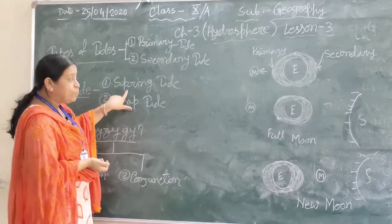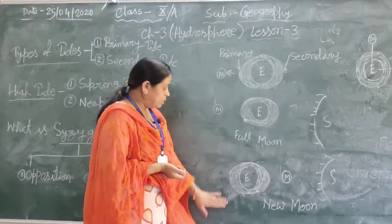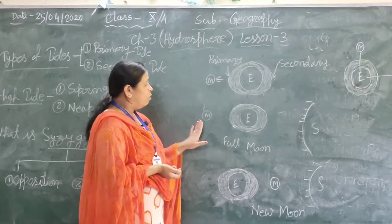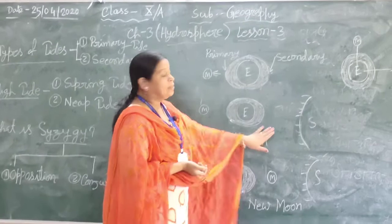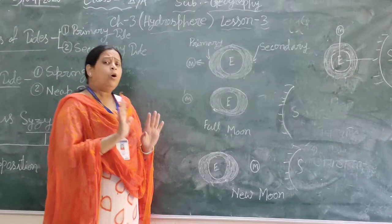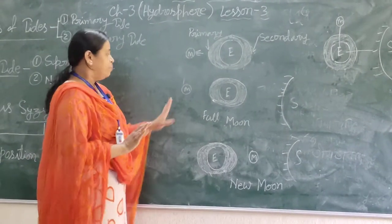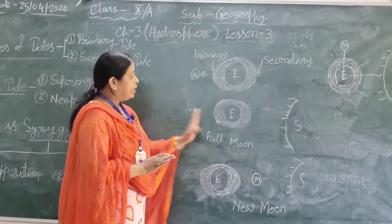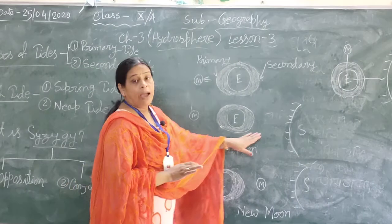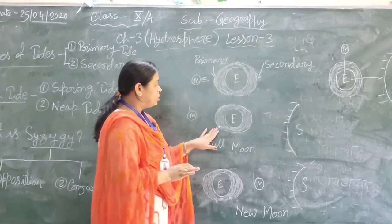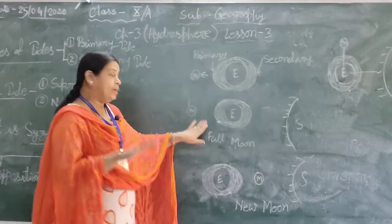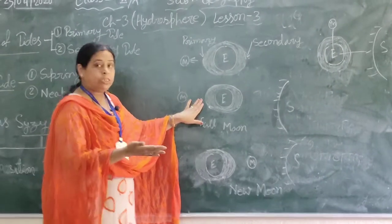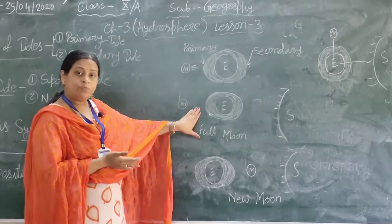What is spring tide? At the full moon, the position of the moon, the earth, and the sun is along an almost straight line. The earth is between the moon and the sun. So the combined attraction of the moon and the sun causes a higher than usual high tide, and it is called spring high tide.